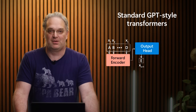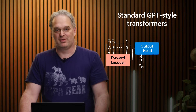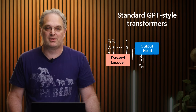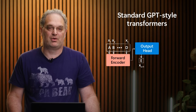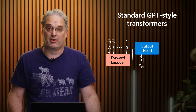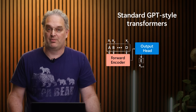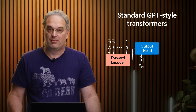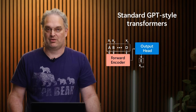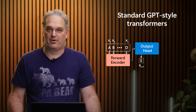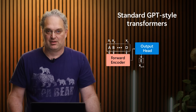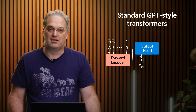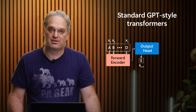To start with, let's talk about standard GPT-style transformers. In standard GPT-style transformers, you have a sequence of symbols going into a forward encoder, and then the forward encoder outputs some information to the output head, and then the output head predicts the final token. This is a straightforward approach and yet amazingly powerful — it's the key backbone behind GPT-4 and other language models.